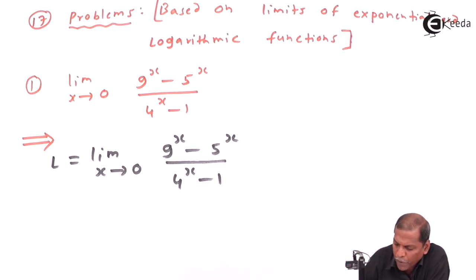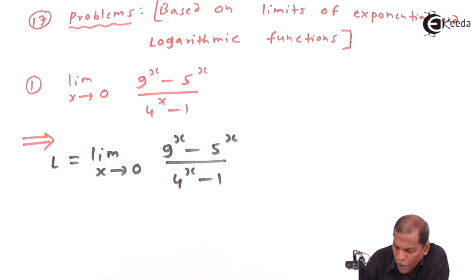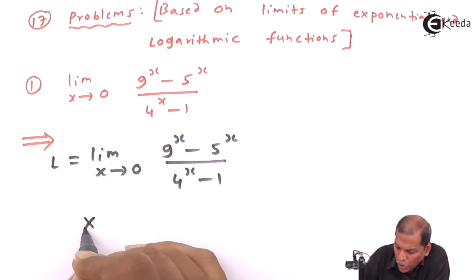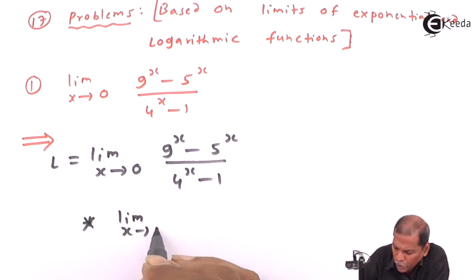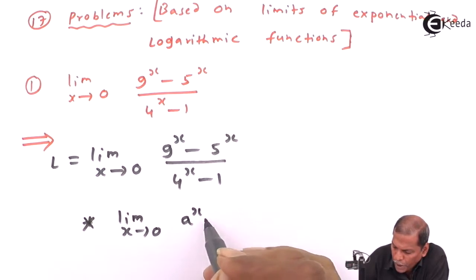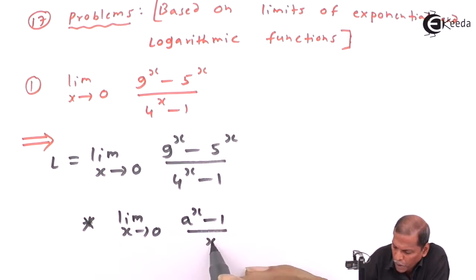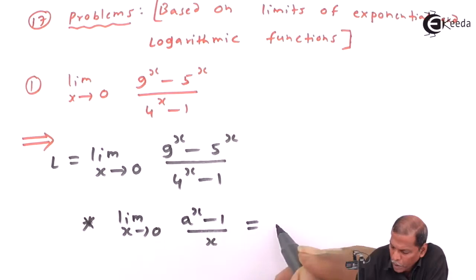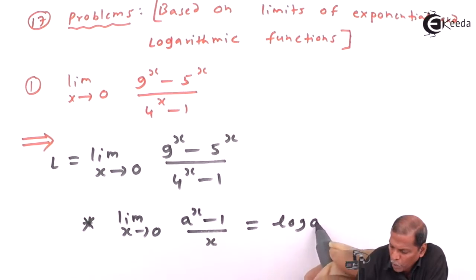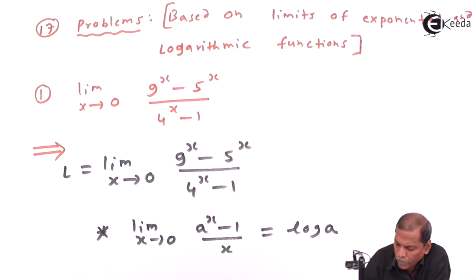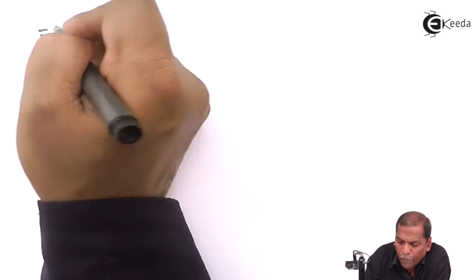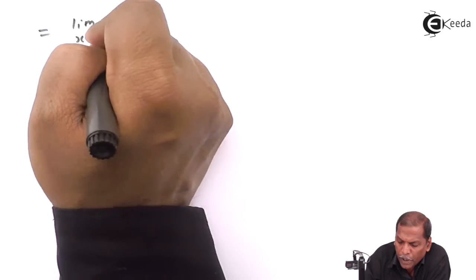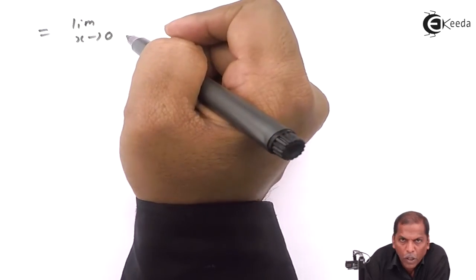To solve this problem we use the rule that the limit as x tends to zero of a raised to x minus one upon x equals log a. The next step will be limit as x tends to zero.